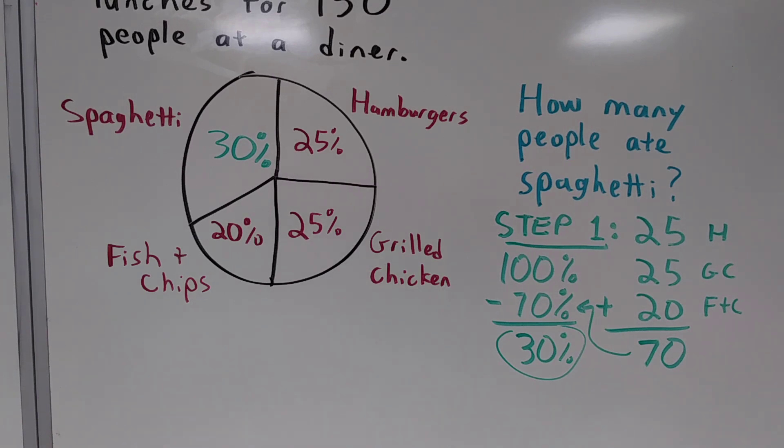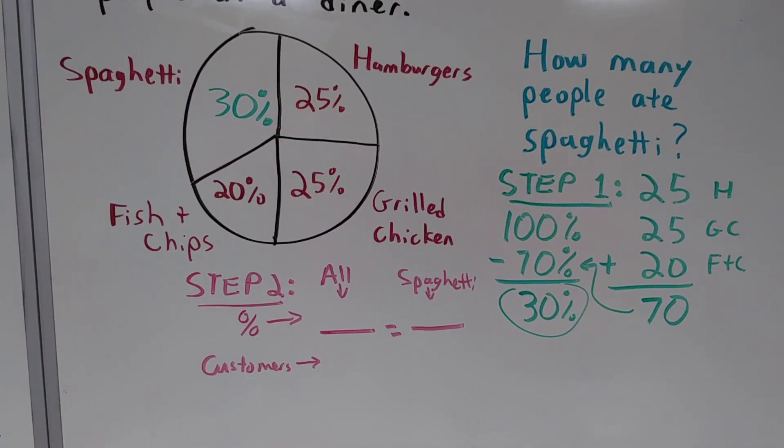So for step two, we're going to have to convert that percent into numbers of people using a proportion. As we set up our proportion, we'll have percentages on top of our ratios and customers on the bottom. For our first ratio, we'll have everyone, and for our second, we'll just look at customers who ordered spaghetti.